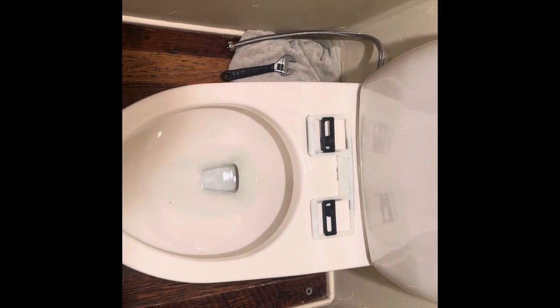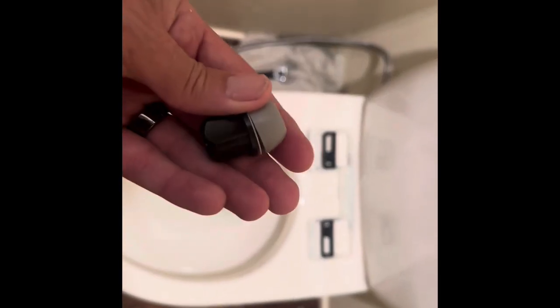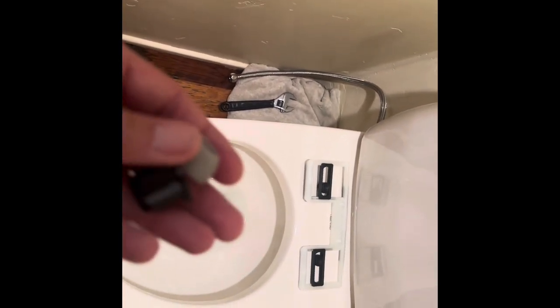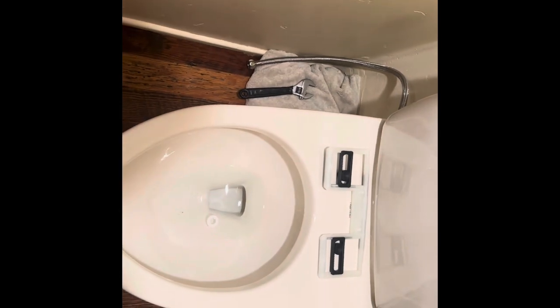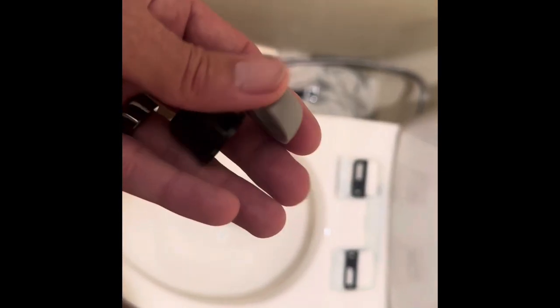So we're doing an install on this Toto toilet, and access is really hard to get. Well, I just dropped it in the toilet, but to get the seal, the nut, and that washer on, I'm going to show you a little shortcut to keep everything together.